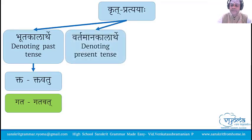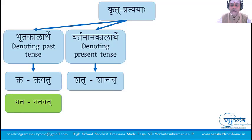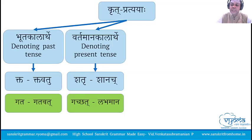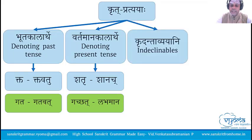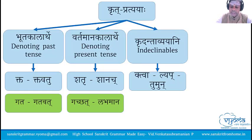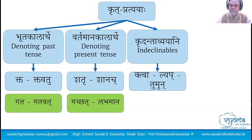The second set of pratyayas we will learn are the vartamana kalartha pratyayas — those which denote present tense. They are the shatru and shanach pratyayas. For gam dhatuhu, we have gachan in Pullinga for shatru; for shanach pratyaya, we have labhamanaha. We will also be learning kridanta avyayas. There are a set of pratyayas which become avyayas when added to the dhatu. Those four pratyayas are tva, lepa, tumun and namul.